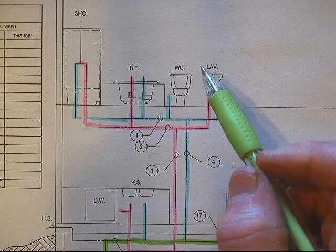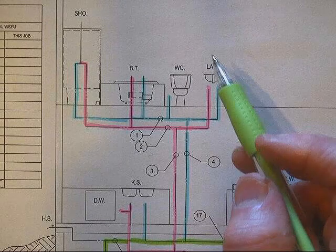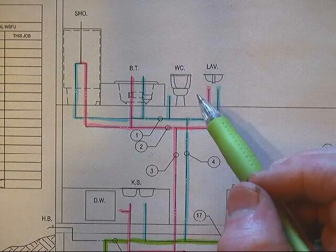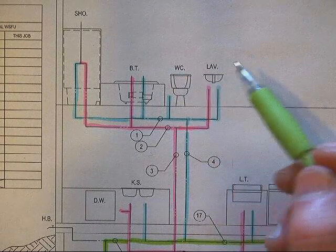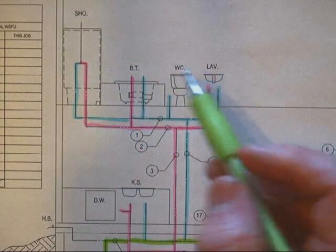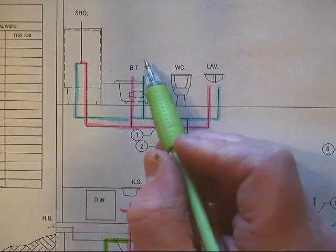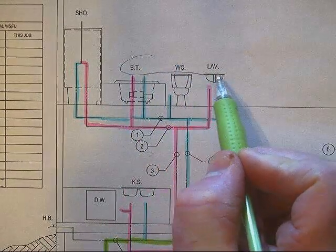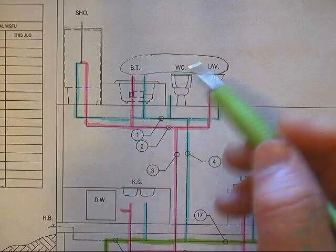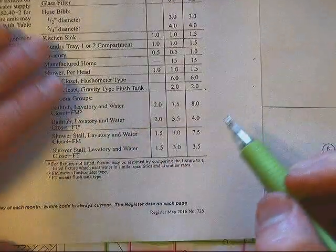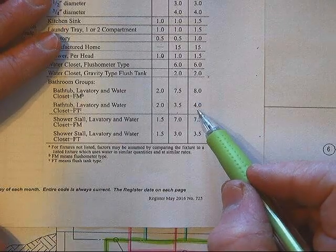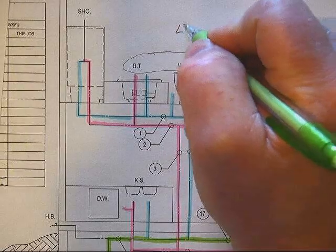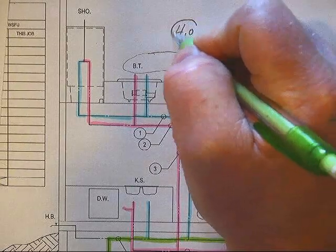A bathroom group consists of just a lav, meaning one, one water closet, and one bathtub or shower. So in this situation I'm going to grab the bathtub, the water closet, and the lav, and again create a bathroom group as we did in the previous group, and assign a total load of four to it. And then I'll circle it.